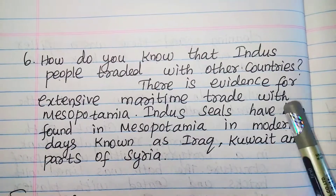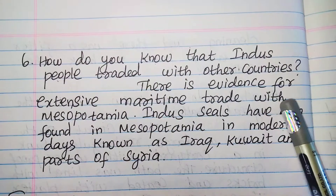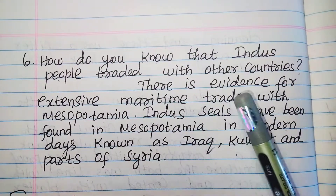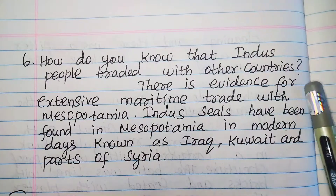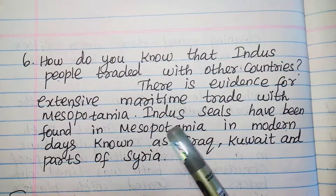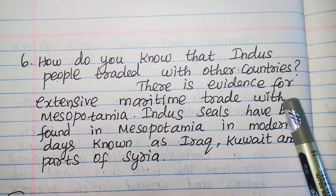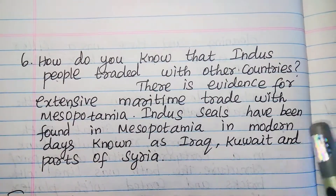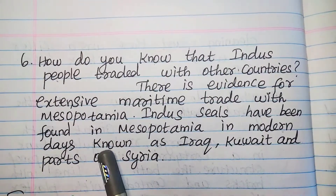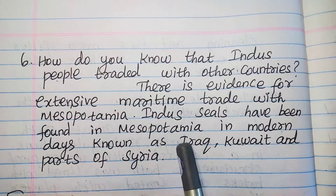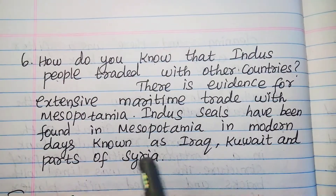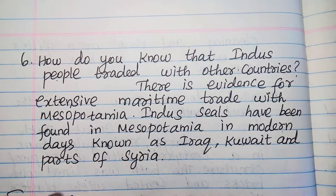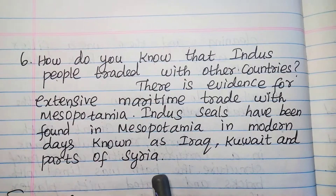Question 5: How do you know that Indus people traded with other countries? There is evidence for extensive maritime trade with Mesopotamia. Indus seals have been found in Mesopotamia — in modern days known as Iraq, Kuwait, and parts of Syria.